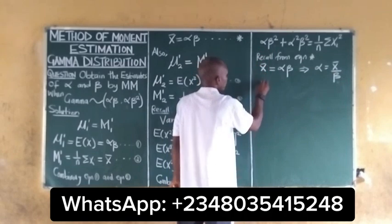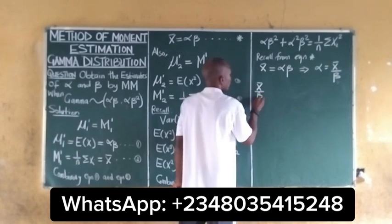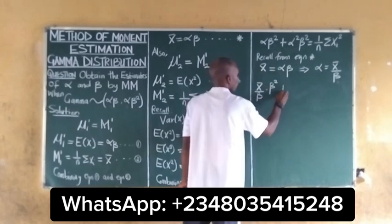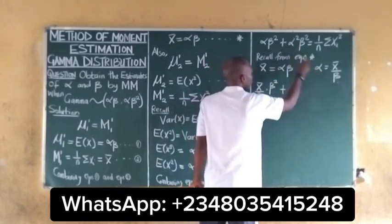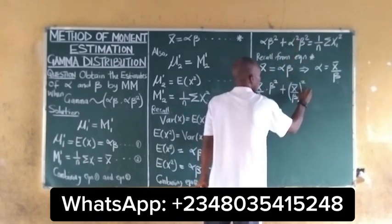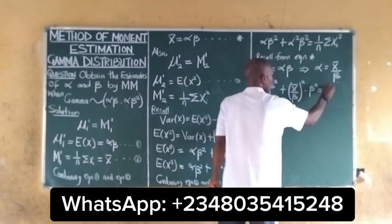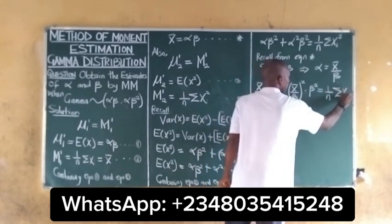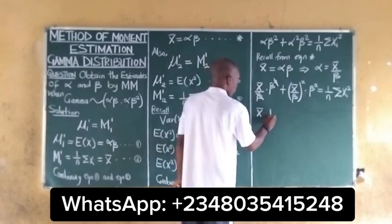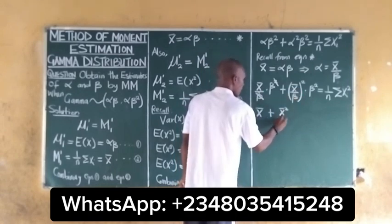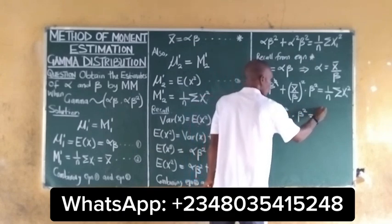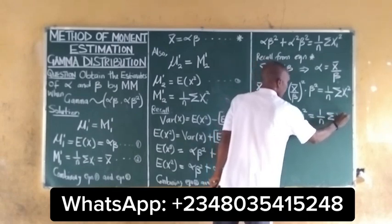Substituting alpha equals x-bar over beta: the first term becomes (x-bar/beta)·beta² and the second term becomes (x-bar/beta)²·beta², giving us x-bar·beta plus x-bar² equals (1/n) times the summation of x_i squared.